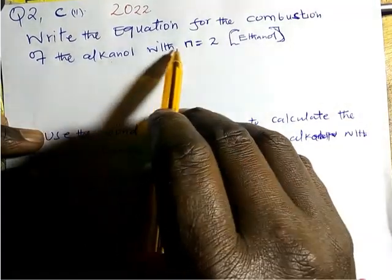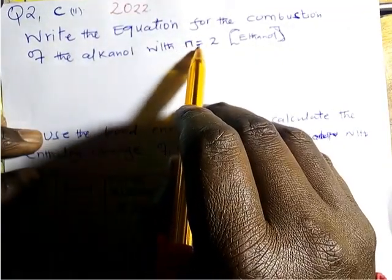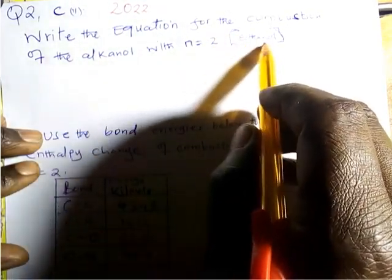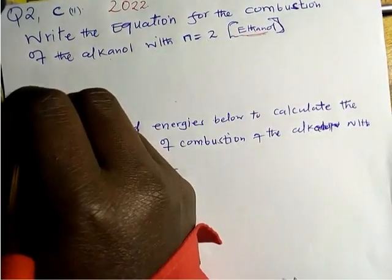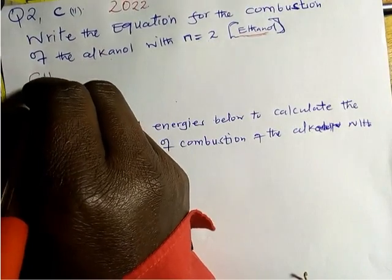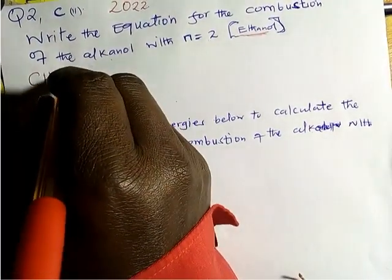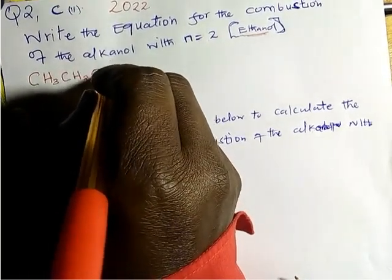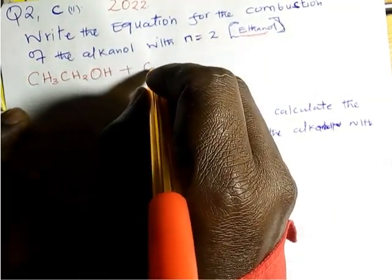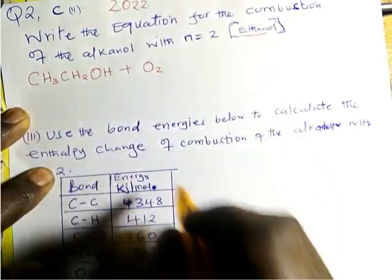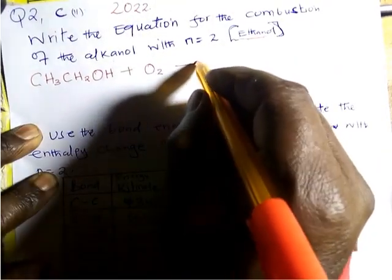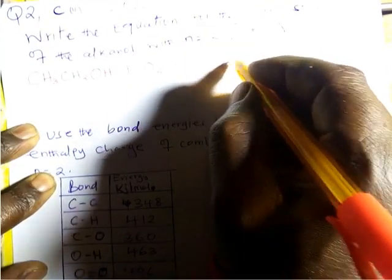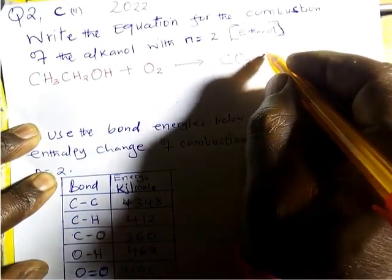First, write the equation for the combustion of the alkanol with n equal to 2. n equal to 2 means the number of carbon atoms is 2, so that is obviously ethanol. We are writing the combustion of ethanol. Ethanol is CH₃CH₂OH, reacting with oxygen — combustion requires oxygen — and forms only two products: carbon dioxide and water.